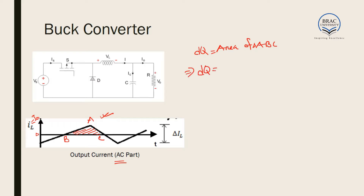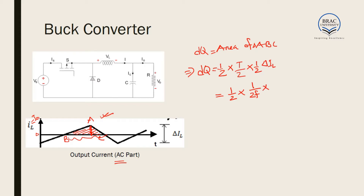dQ = ½ × base × height. The base is T/2 (half cycle) and the height is ΔI_L/2. This gives dQ = (1/2F) × (1/2) × ΔI_L. For the buck converter, ΔI_L = (V_0/L) × (1−D) × T. We can then write dQ = C·dV_0.